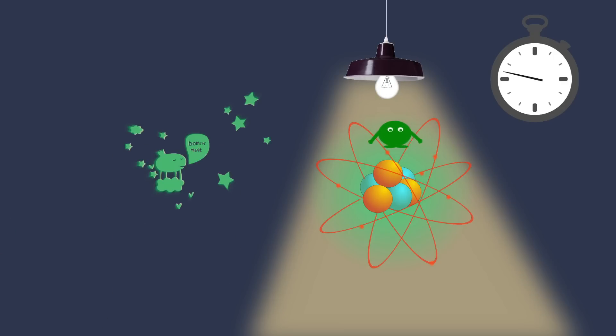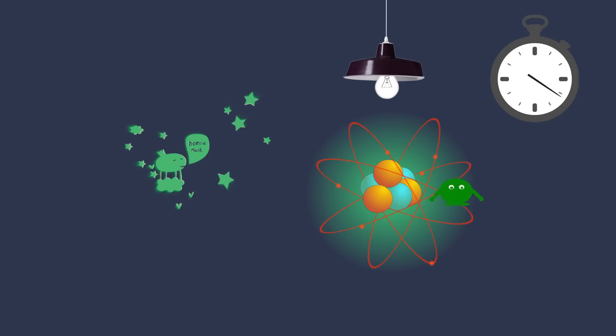On the contrary, as regards phosphorescent materials, the time lasts several minutes, even several hours for some of them. Therefore, when the light is cut, they keep on emitting light all along.